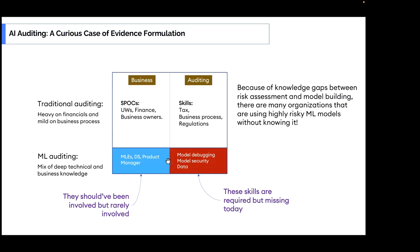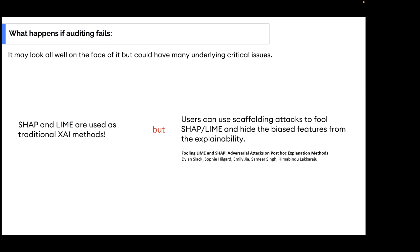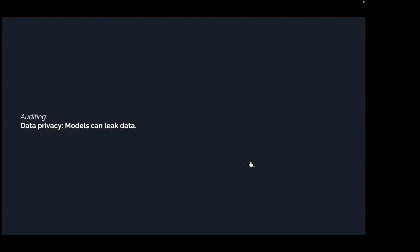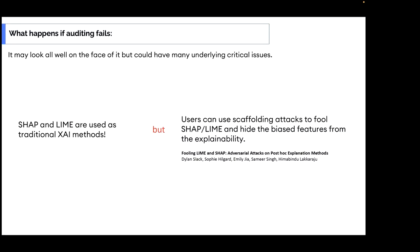ML observability can help simplify the auditing process. One challenge is that techniques like SHAP and LIME used for explainability are not consistent and are prone to scaffolding attacks — where someone can actually fool these explainability algorithms to hide a sensitive variable and show a third party that the sensitive variable is not being used, effectively complying on paper while not actually doing so.